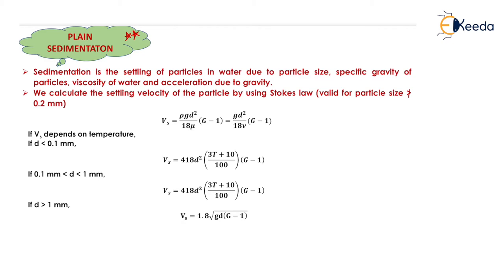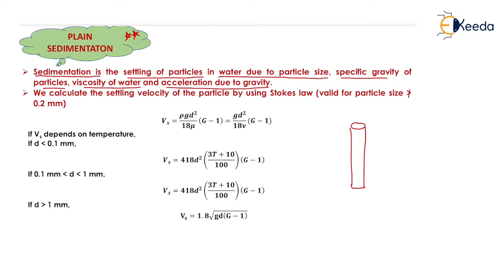In the plain sedimentation process, water is generally kept in a large container and allowed to settle under the influence of gravity by providing sufficient detention time. When the particles settle down, we remove them from the tank and send the water for the next process, which is sedimentation aided with coagulation and flocculation. Sedimentation is the settling of particles in water due to particle size, specific gravity of the particle, viscosity of water, and acceleration due to gravity.